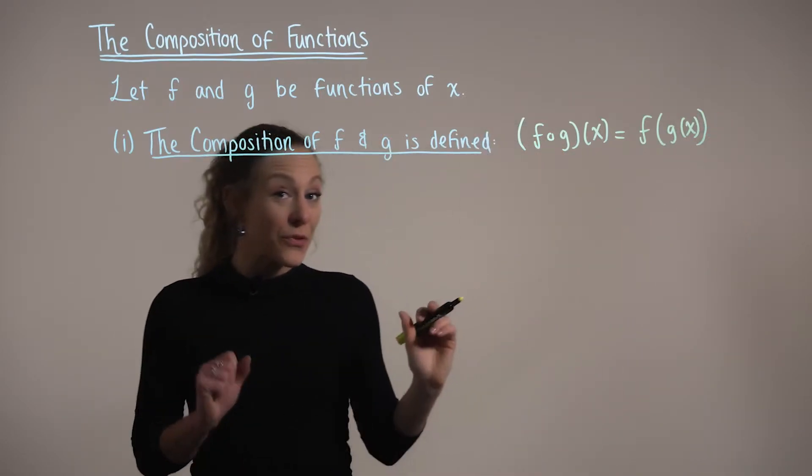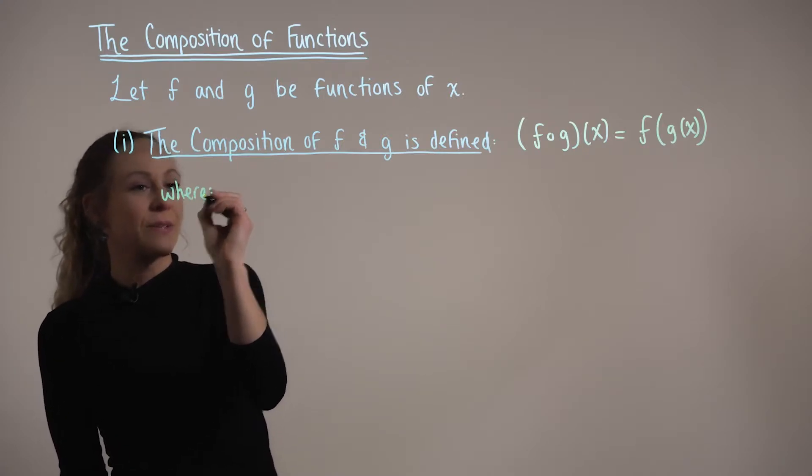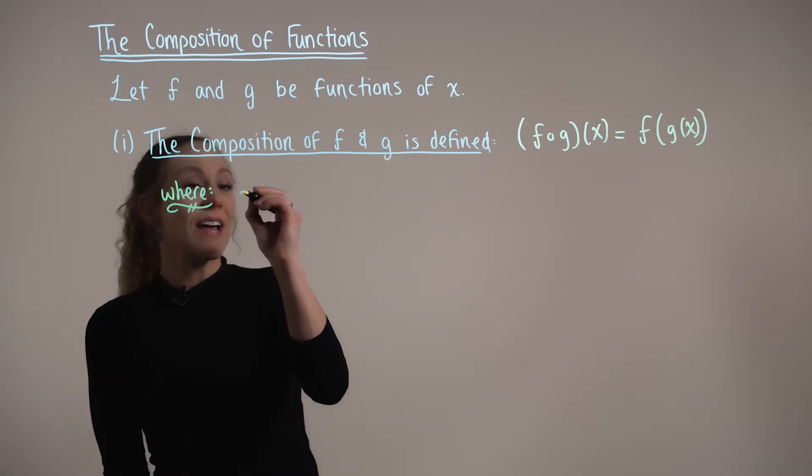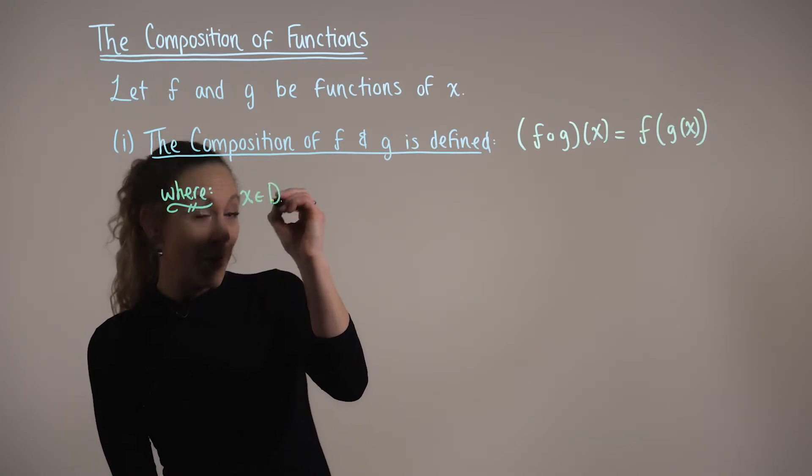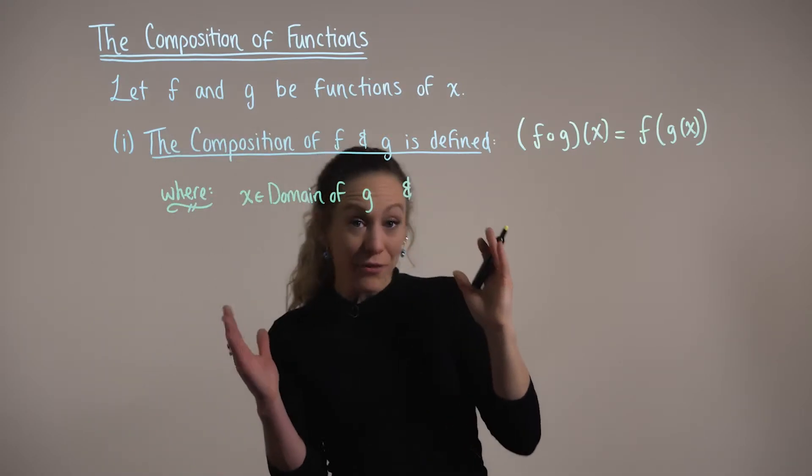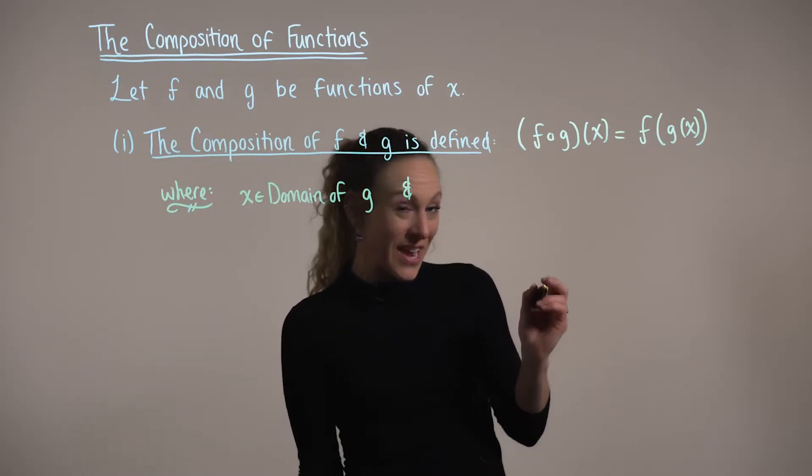Now, we should make a couple of notes here. So in terms of the domain of a composition, we can say that this is where x is an element of the domain of the inner function g, and our function g of x is an element of the domain of the outer function f.